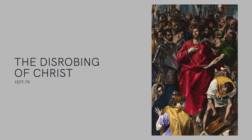Now that we understand his life, it's time to examine some of his most famous works. We are going to start with The Disrobing of Christ. El Greco painted it between 1577 and 1579. It was a commission for the Cathedral of Toledo, where it hangs to this day. Occasionally, it is taken to the Prado Museum for cleaning and restoration. This painting tells the story of Christ's robes being removed in preparation for his crucifixion. In the bottom right corner, the viewer can see the three Marys looking across the painting to a man building the cross that will be an instrument of Jesus' death.